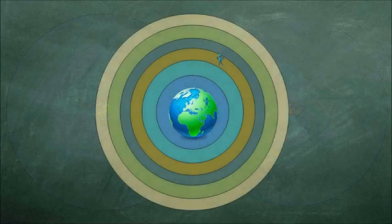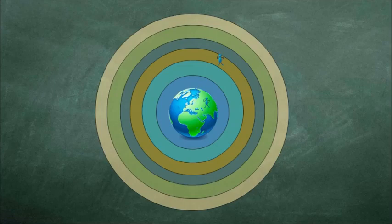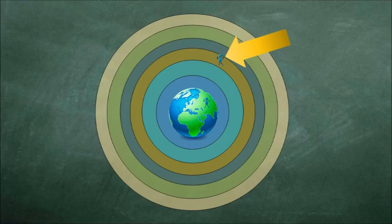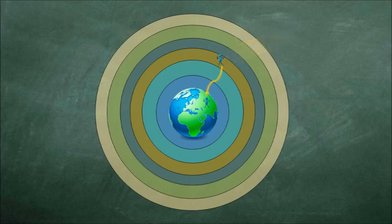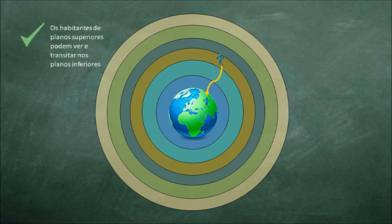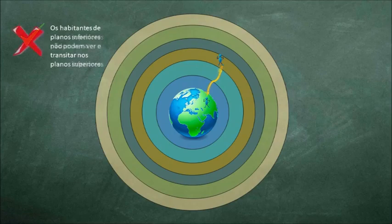Agora vamos introduzir o conceito de limites de transição entre os planos. Imagine um habitante de uma colônia espiritual, como a colônia Nosso Lar, por exemplo. Esse espírito, revestido do seu perispírito, de matéria bem menos densa que a do homem encarnado, pode transitar, perceber, ver os planos abaixo dele, como, por exemplo, o próprio plano físico que habitamos. A situação inversa não pode ocorrer.